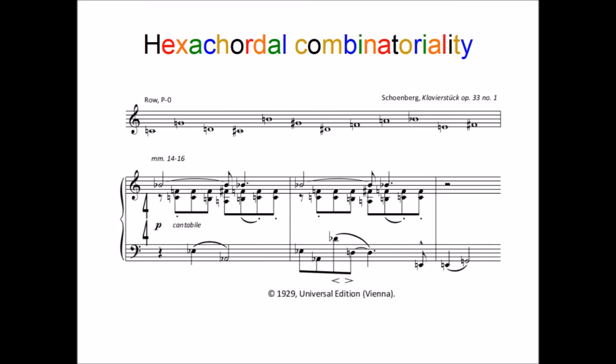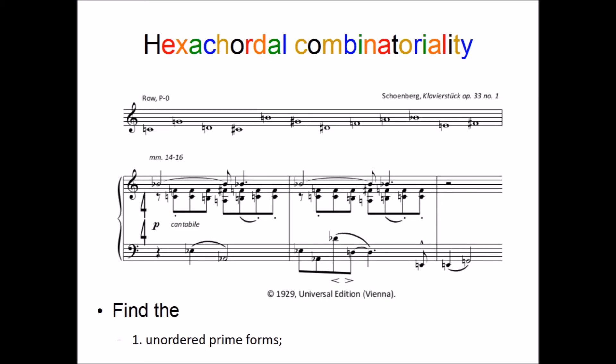Finally, analyze the following passage. Given P0 and assuming each hand presents a different form of the row, find the unordered prime form of each hand's hexachord, the type of combinatoriality, and the secondary row.